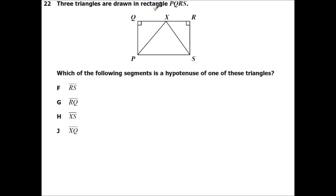Alright, three triangles are drawn in rectangle PQRS. Which of the following segments is a hypotenuse of one of these triangles? So this would be a hypotenuse. This would be a hypotenuse. And we wouldn't know what the hypotenuse of this triangle is because they didn't give us the right angle. So RS, not one. RQ, nope. XS, yep. And then XQ, no. Alright, so XS would be one of our hypotenuse.